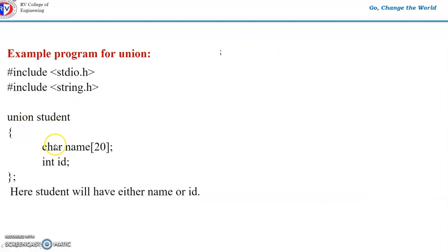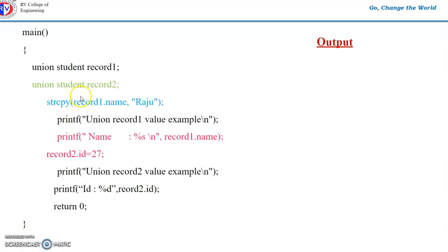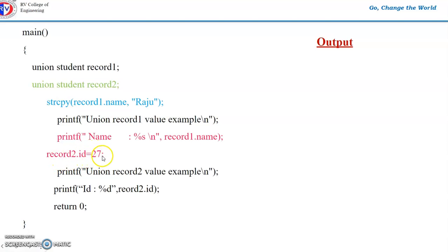Suppose I have a union student with members char name[20] and int id, indicating the student union member will hold either a name or an id. Declaring union student record1 and record2: for record1, I initialize the name using strcpy(record1.name, "Raju"), which sets the name of record1 to Raju. Printing record1.name will output Raju. For record2, I initialize record2.id = 27, and printing the id will output 27.